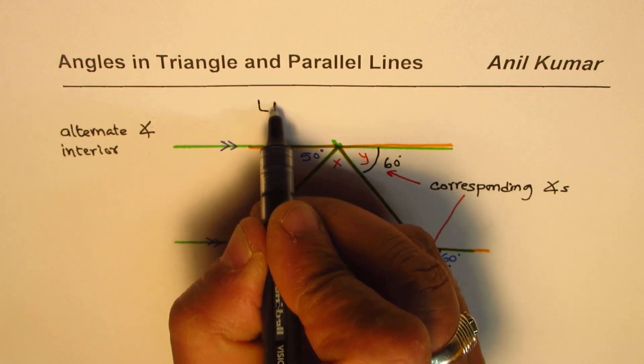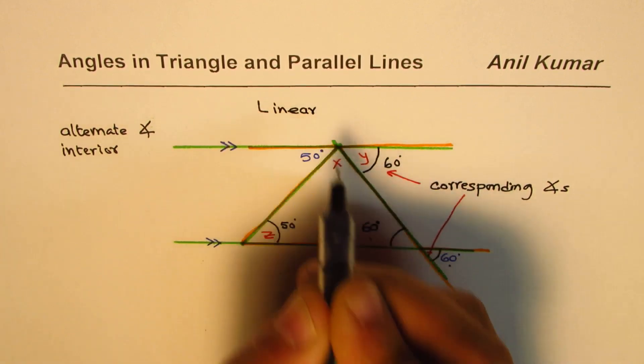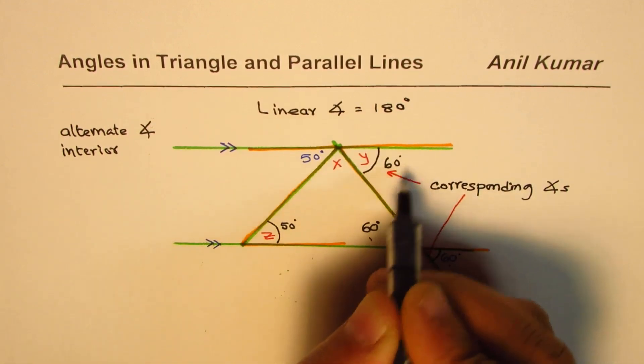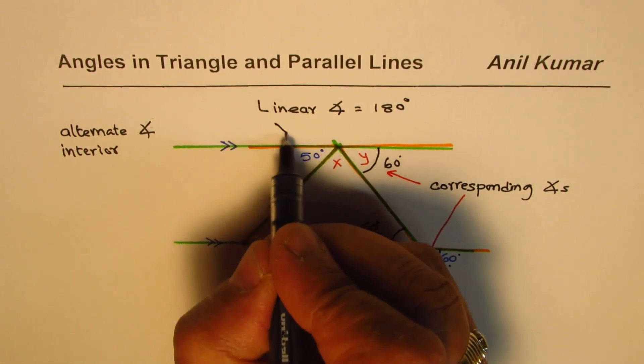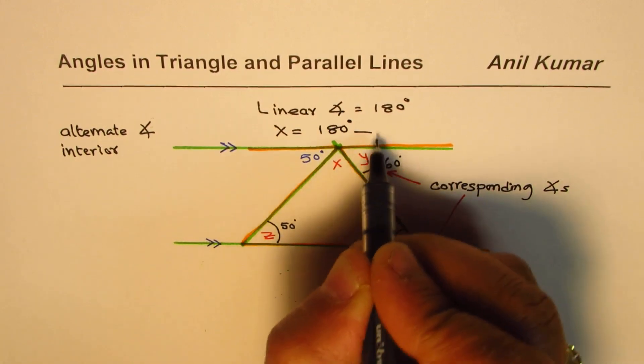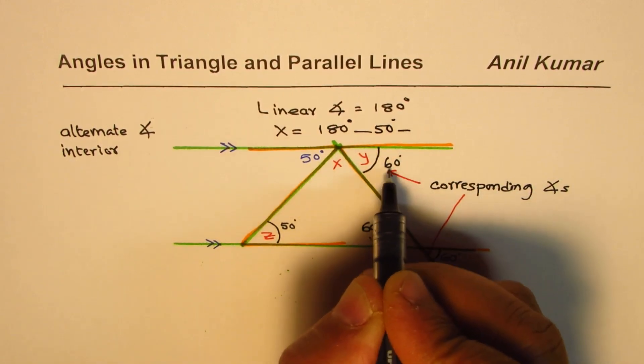So the straight line is called linear, right? So linear angle is equals to 180 degrees. The sum. So x should be equal to 180 degrees. Take away 50 and also take away 60.